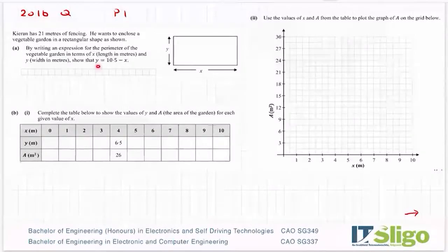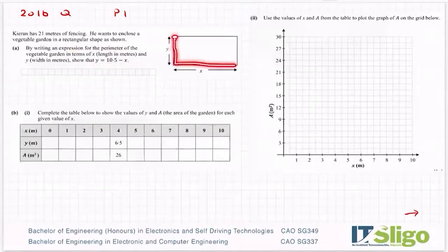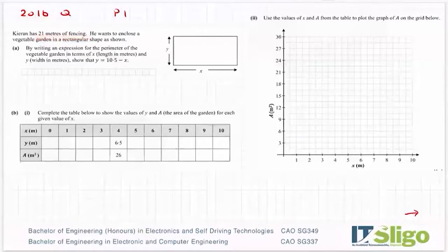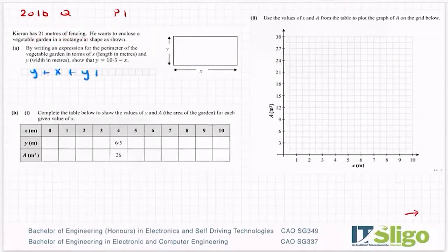Okay, when you see something like this, it can really throw you, but try not to let it dominate the question. It says by writing an expression for the perimeter, and you probably do know that perimeter just means walk the walk. So start in one corner, walk around your garden, and add up the length of all the sides. So when I do that, I get y plus x plus y plus x, and they've told us how much fencing he has. So I have y plus x plus y plus x being equal to 21, or 2x plus 2y being equal to 21.